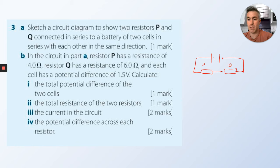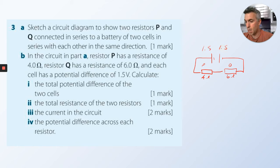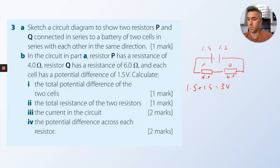Resistor P has a resistance of 4 ohms and Q has a resistance of 6 ohms. The battery is two cells of 1.5V each. The total potential difference across the two cells is 1.5 plus 1.5 equals 3 volts.